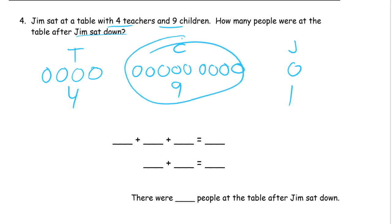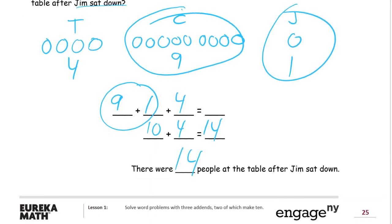So nine and one, partners to ten. We'll add those first. Nine plus one, and then the four. The nine and one together make it ten. So ten plus four is fourteen. And there were fourteen people at the table after Jim sat down.